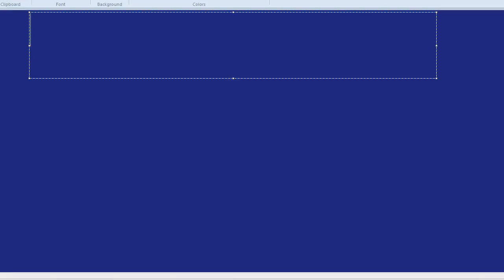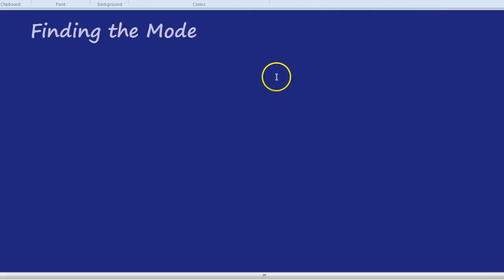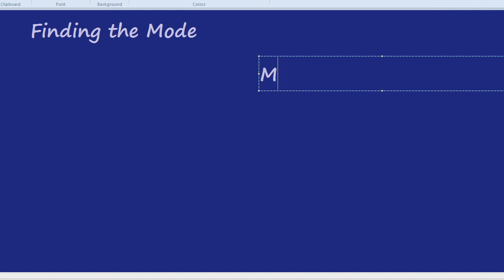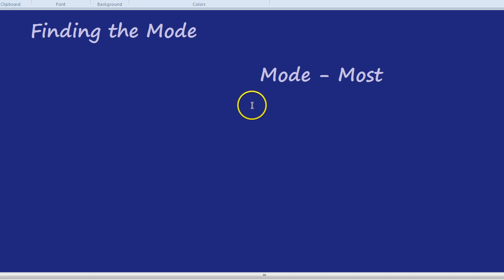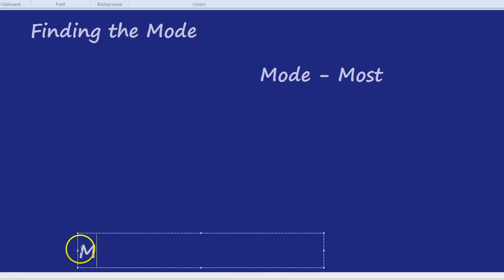This video is going to be on finding the mode from a group of numbers. I think the biggest challenge in finding the mode is simply remembering what it means. A good way to remember it perhaps is mode is just like most, and it's the number that comes up most often. So mode equals most often or most common.